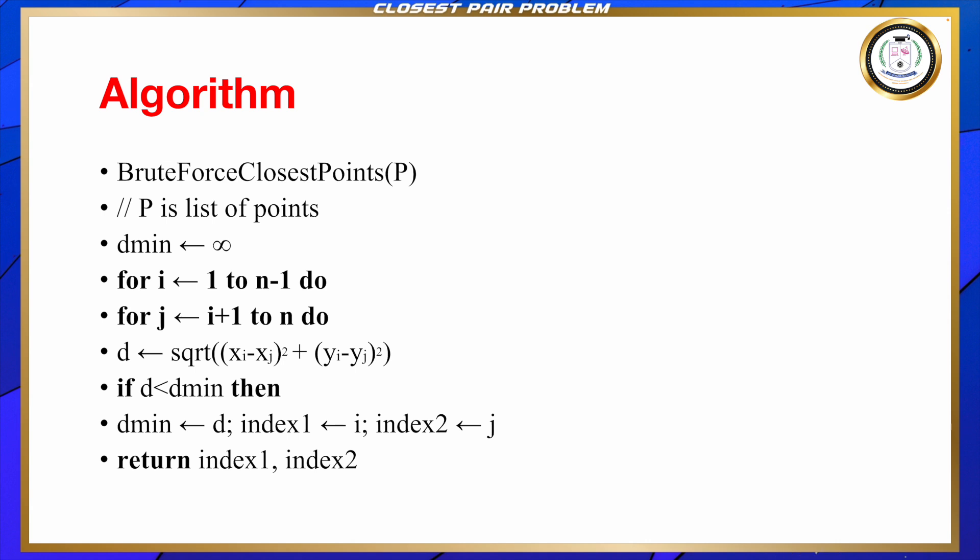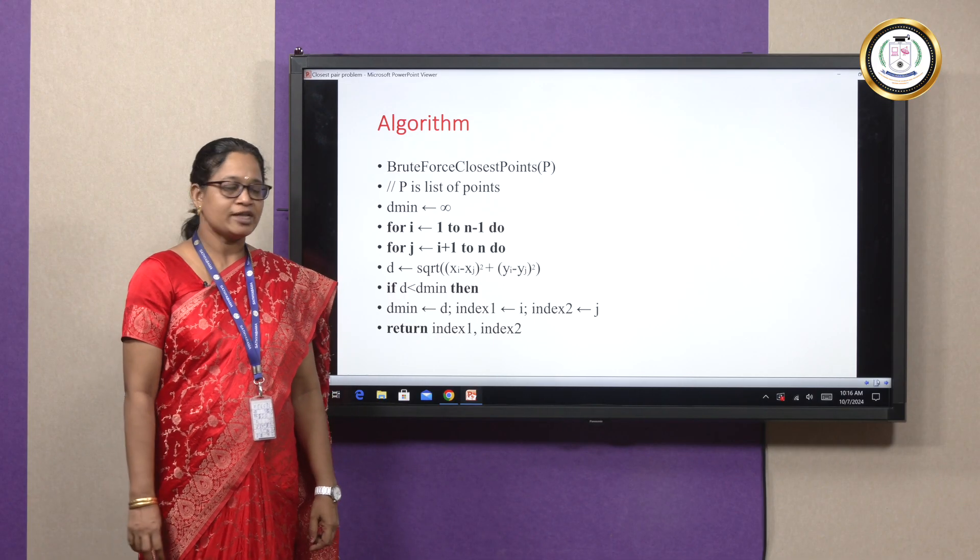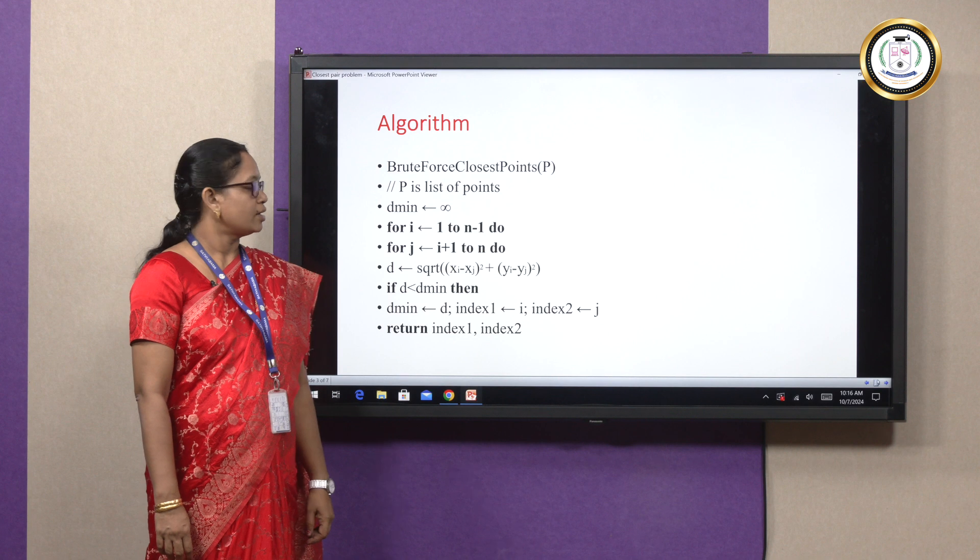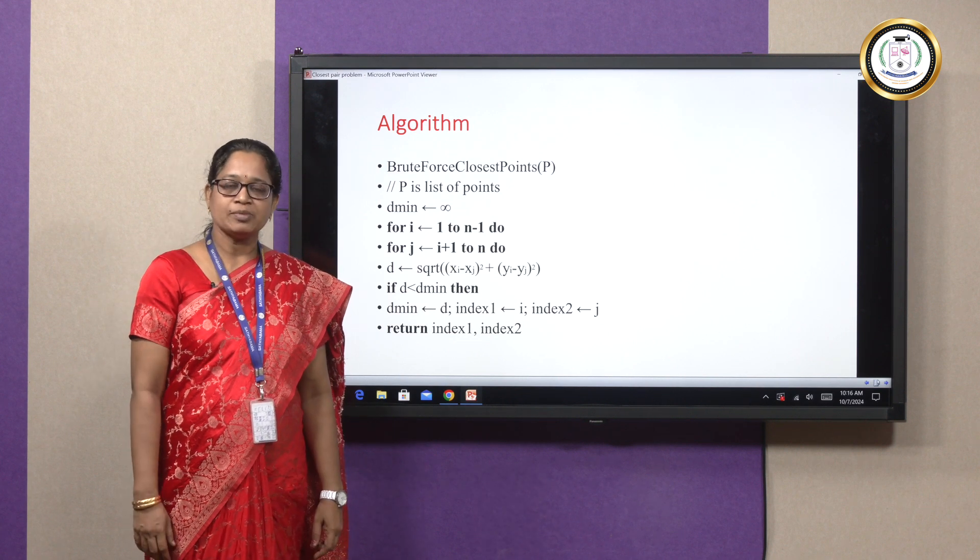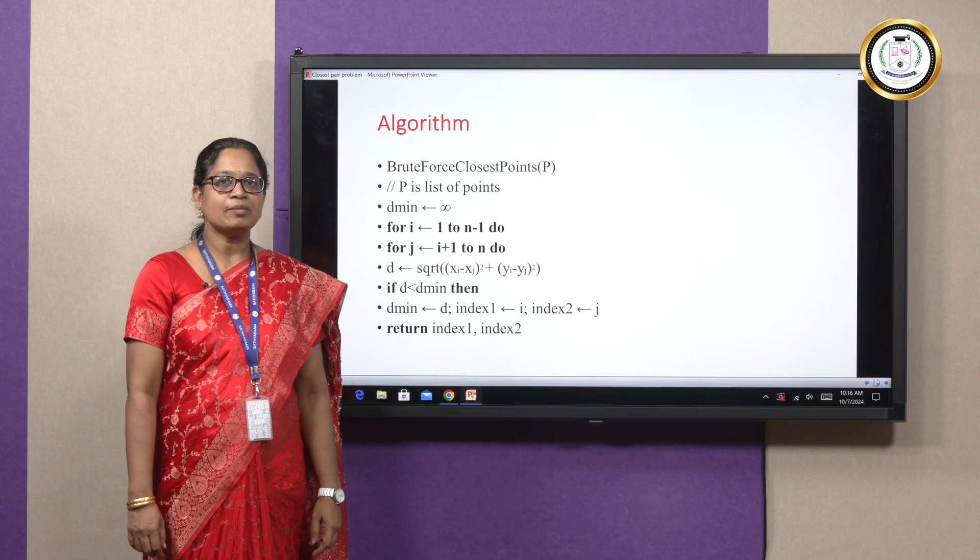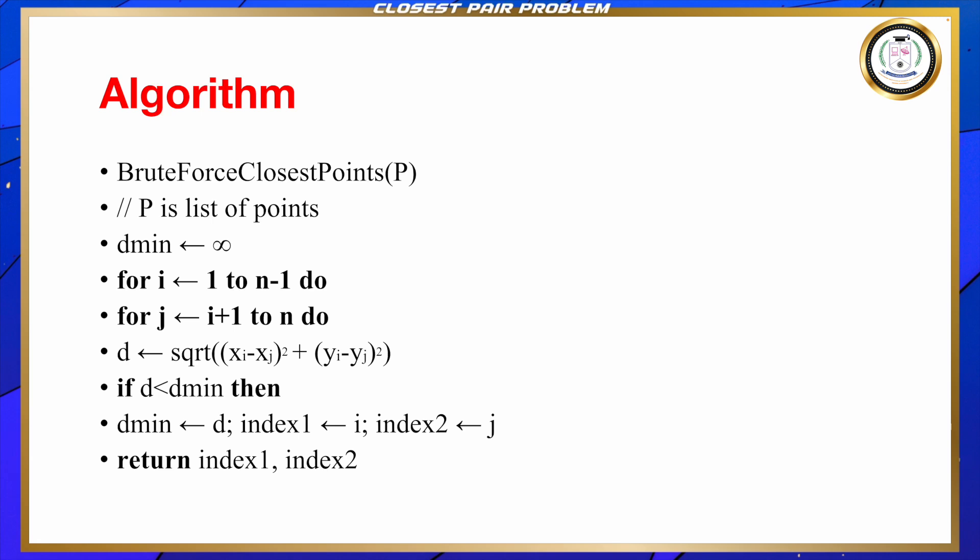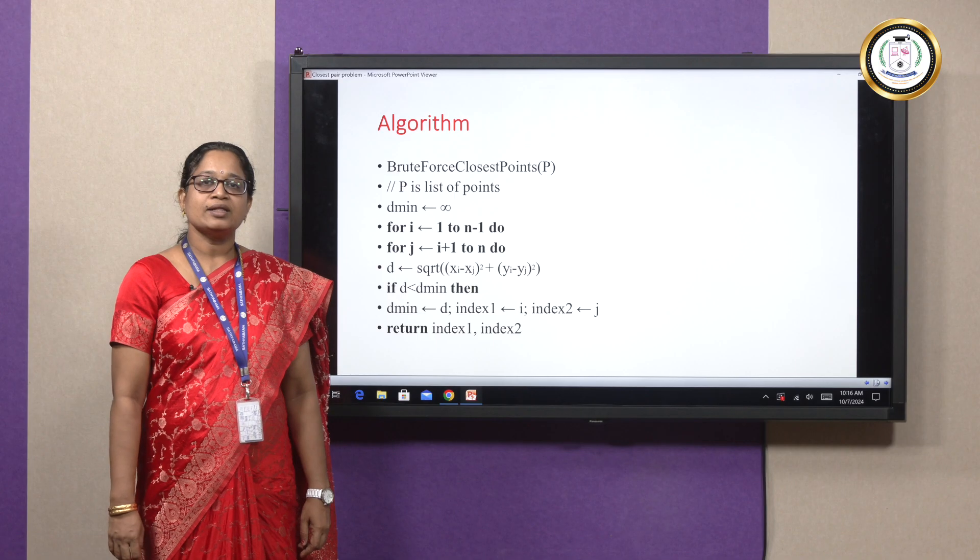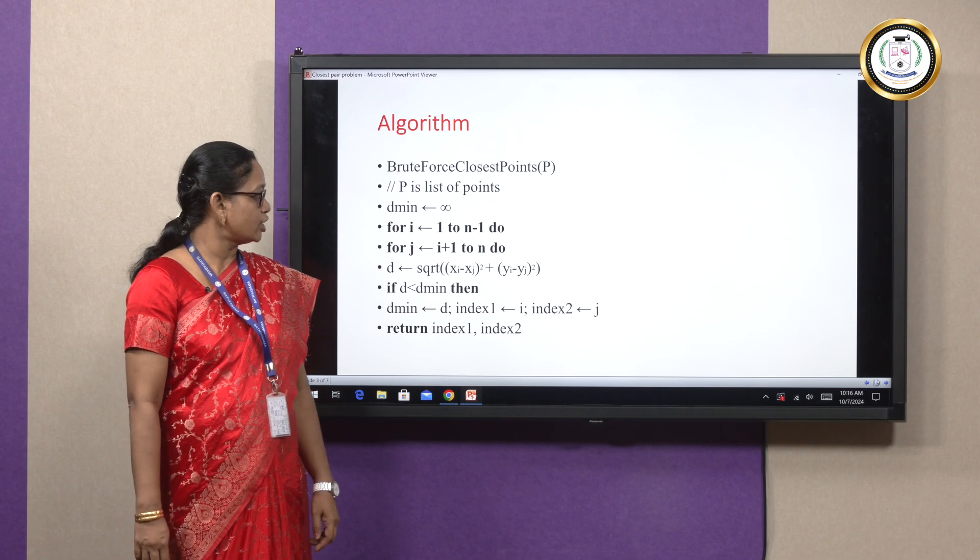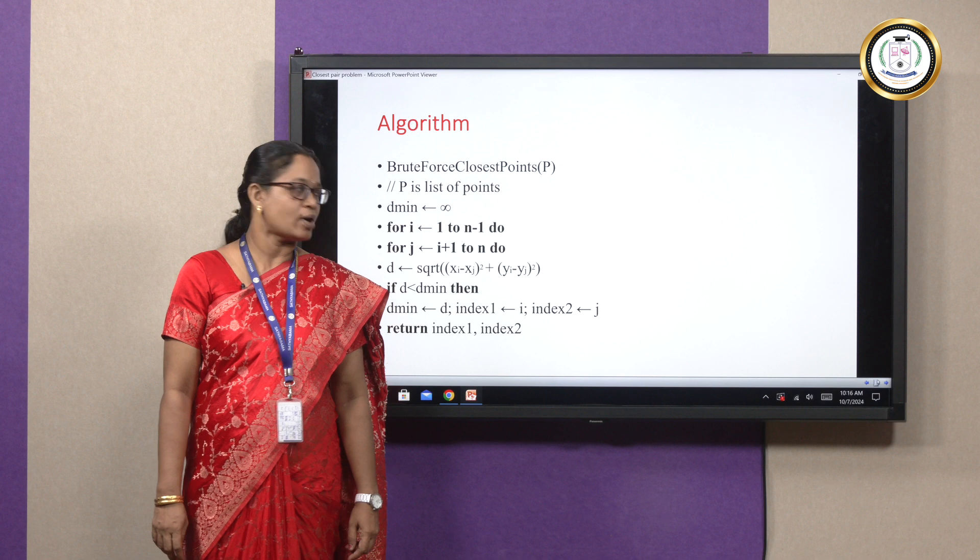Here is the algorithm for finding the closest pair problem. Let us look at the algorithm. Here p is the list of points and initially we do not have any minimum distance, so let us have the minimum distance as infinity. We have two for loops here. The first for loop has index i which varies from 1 to n-1 and the second for loop has index j which varies from i+1 to n.